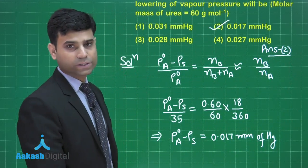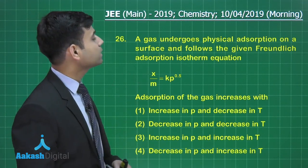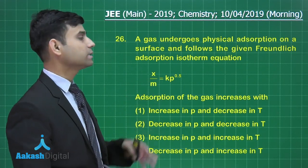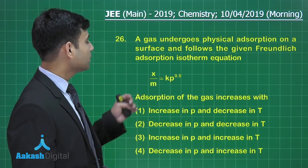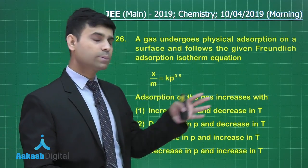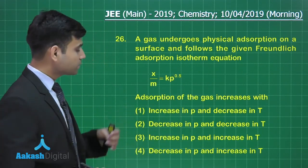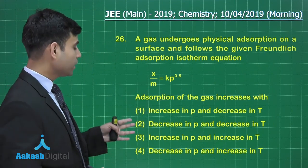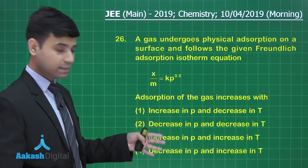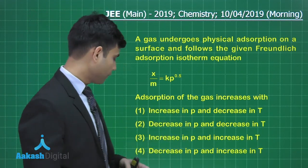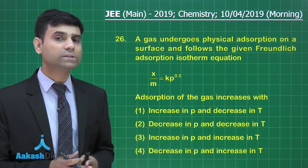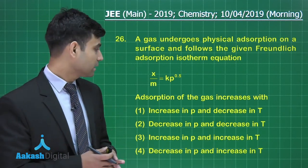The next question says: a gas undergoes physical adsorption on a surface and follows the Freundlich adsorption isotherm equation X/M = K·P^0.5. Adsorption of the gas increases with — option 1: increase in pressure and decrease in temperature; option 2: decrease in pressure and decrease in temperature; option 3: increase in pressure and increase in temperature; option 4: decrease in pressure and increase in temperature.